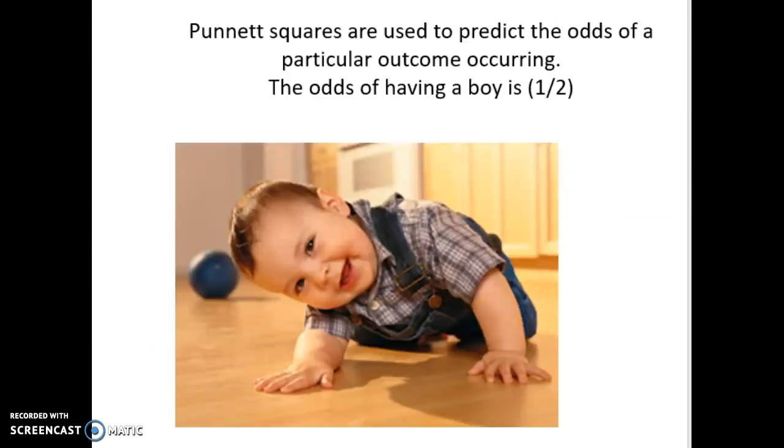Here's an example. Punnett squares predict odds. That's all they do. Couple's going to have a baby. 50-50. The odds are 50-50. 50% chance they're going to have a boy. You only have two choices, boy or girl. So the couple has a boy.